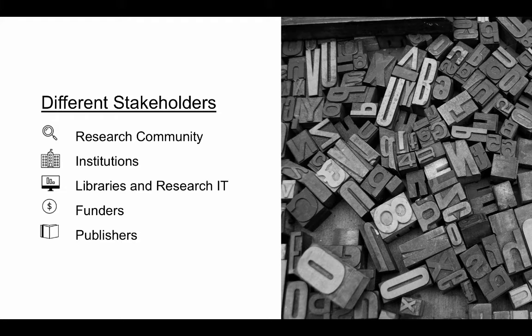There are very different stakeholders involved in research data: the research community, institutions, libraries, funders, and publishers. Not only are there these different stakeholders, but these groups are not homogeneous within themselves. The research community is incredibly heterogeneous about how it thinks about and talks about research data. People in the research community also work with funders and publishers, and the perceptions and priorities are kind of messy.